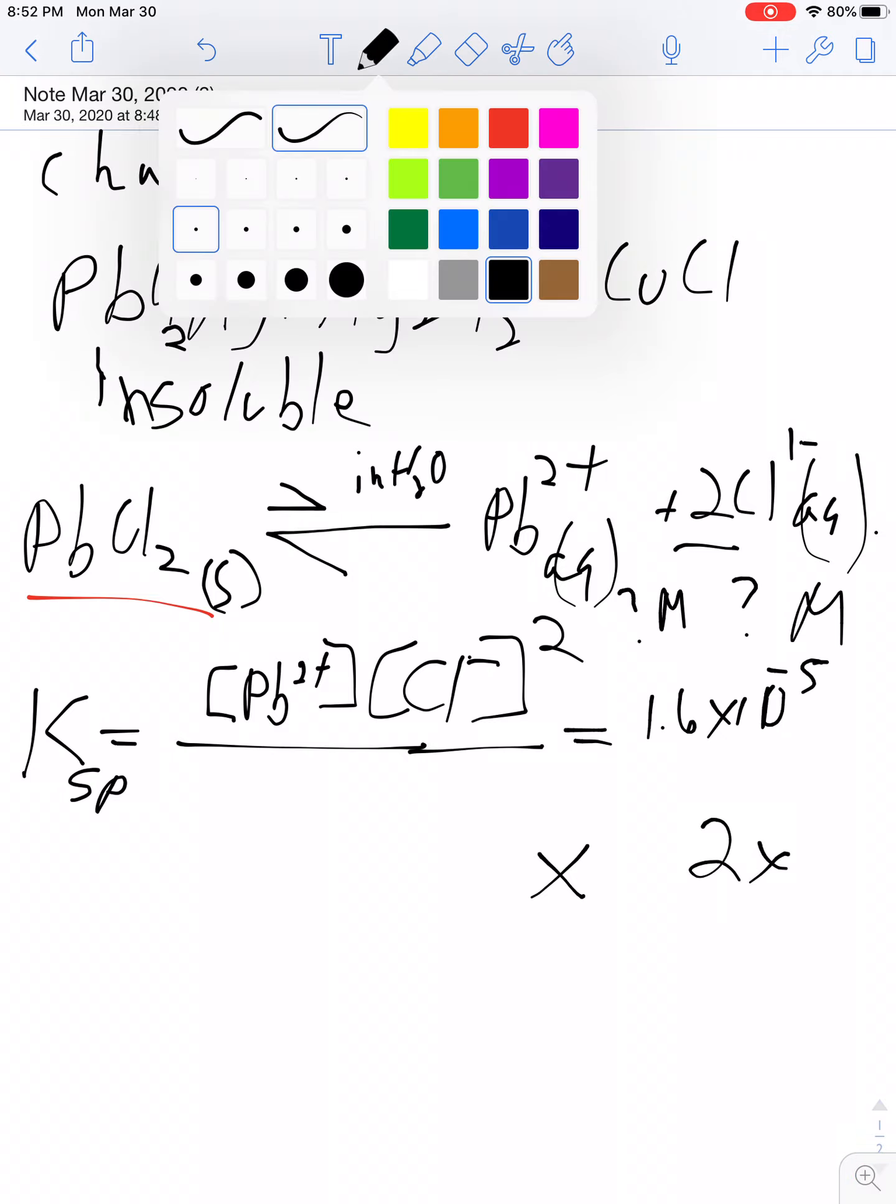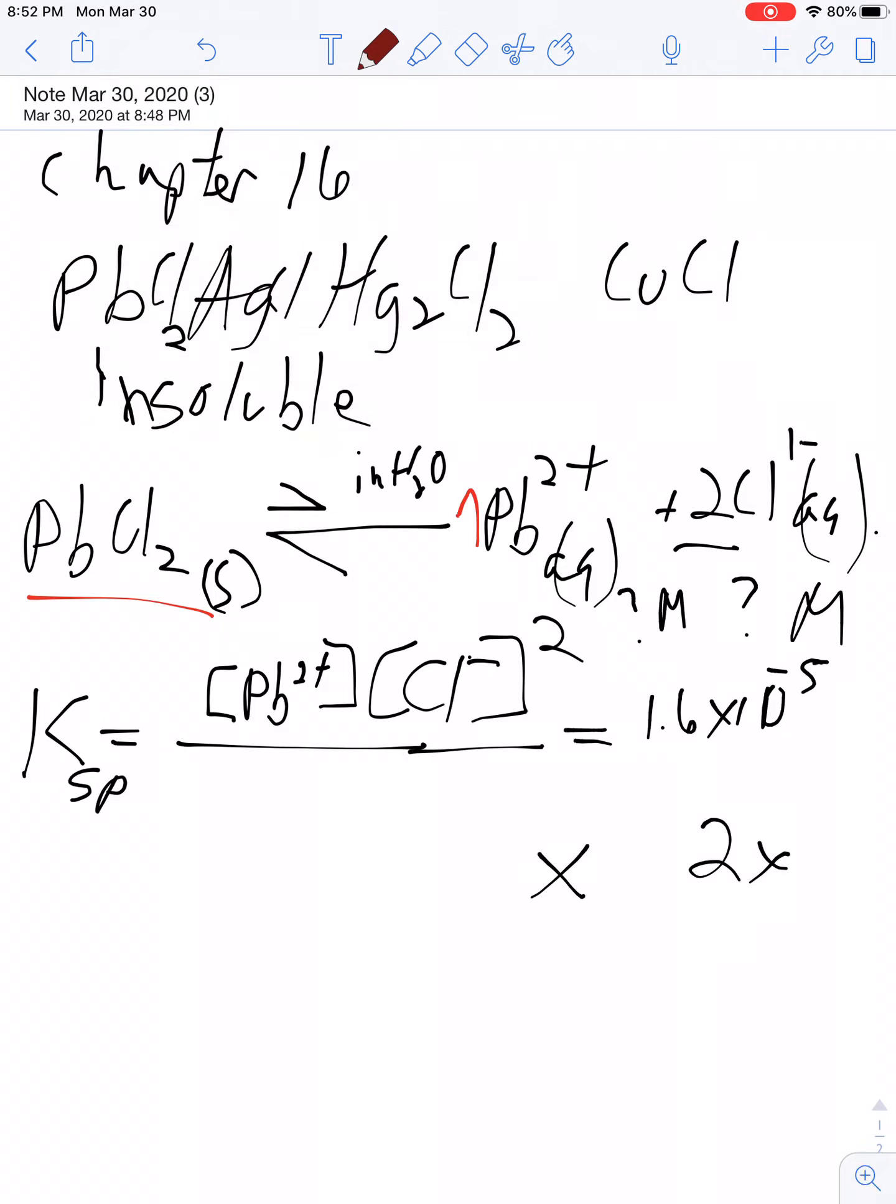The amount of lead that dissolves, lead ions, we'll call x. The amount of chlorine ions will be twice as big, 2x, because we have one of these and two of those. Then we plug these variables into our equilibrium equation. We have x times 2x squared - don't forget the square - equals 1.6 times 10 to the negative fifth. Then we just solve for x.